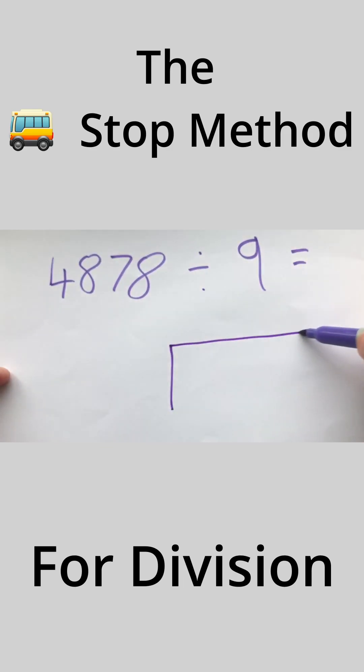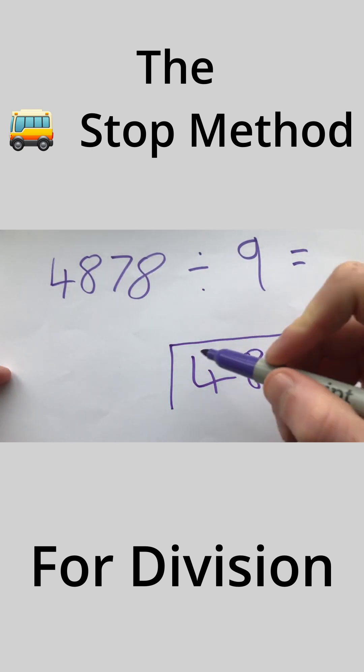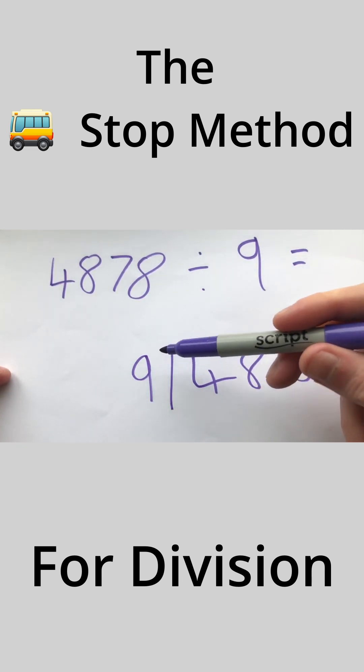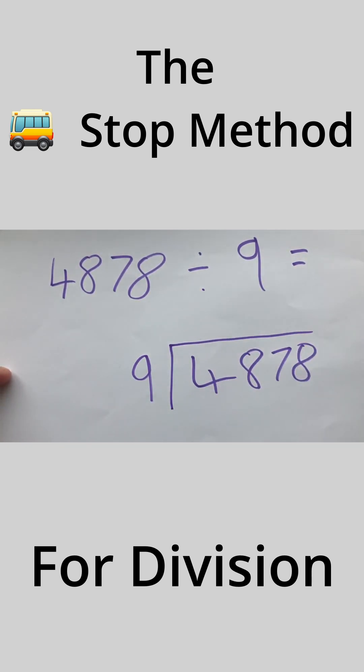Another example, we draw a bus stop method. 4878 and we're dividing by 9. So again, we follow the steps. How many nines going to 4? Well they don't, so we'll move across. How many nines going to 48?